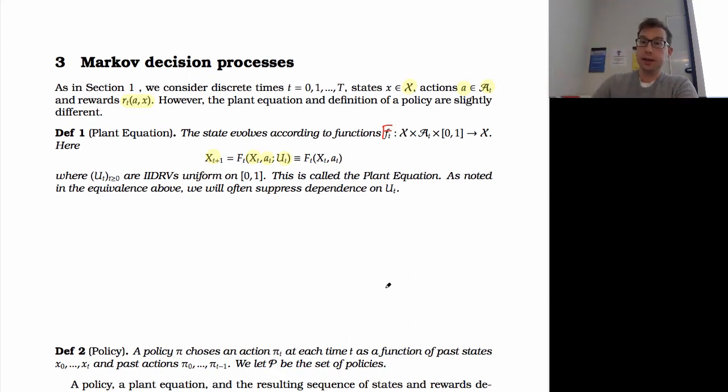So in a dynamic program, we just considered the state and the action. In the Markov chain, we considered the state and then some uniform randomness, and now we're considering all three of those things together. And again, this is called the plant equation. I've written the uniform random variable here with the semicolon. I'm often going to suppress the uniform random variable when I write down the plant equation. So it should be understood that if I'm saying it's a Markov decision process and I don't write the U of T in it, that it's still random.